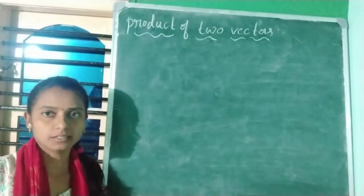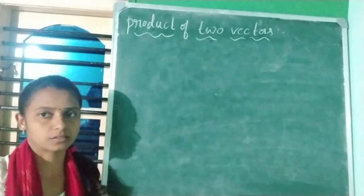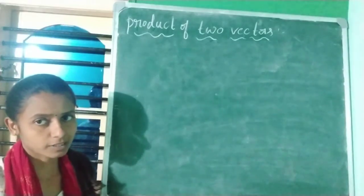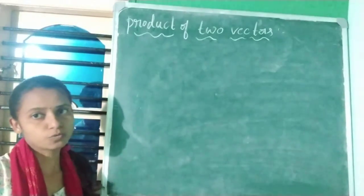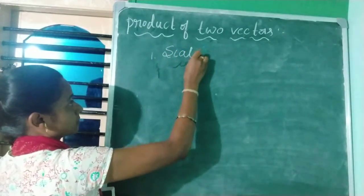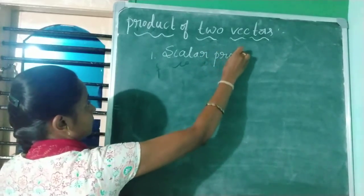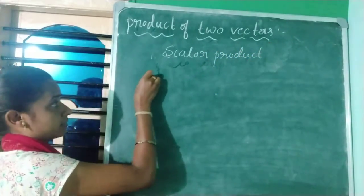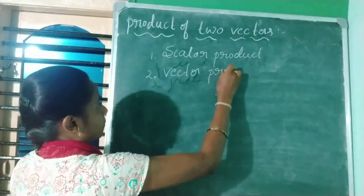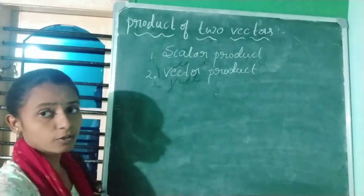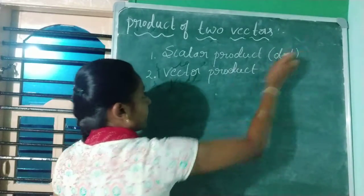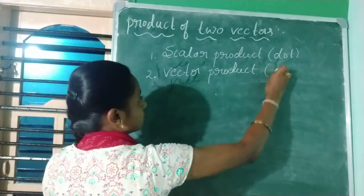The next concept in vector algebra is the product of two vectors. Multiplication of two vectors is defined in two ways. The first one is the scalar product, also called the dot product. The second one is the vector product, also called the cross product.